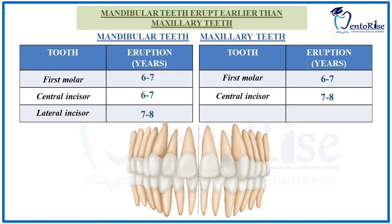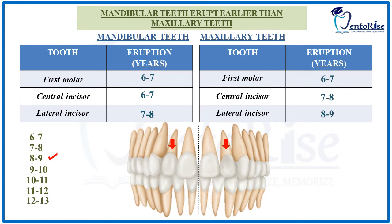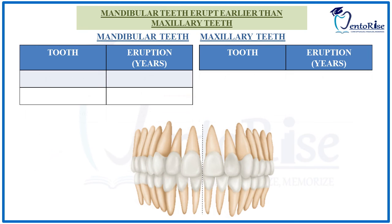After the mandibular lateral incisor, its maxillary counterpart — the maxillary lateral incisor — will erupt at the age group of 8 to 9 years. You can observe that the maxillary teeth are erupting at an age 1 year later than the mandibular teeth; this is how you are going to remember this chronology. The next tooth to erupt is the mandibular canine, which erupts in the next age group of 9 to 10 years.